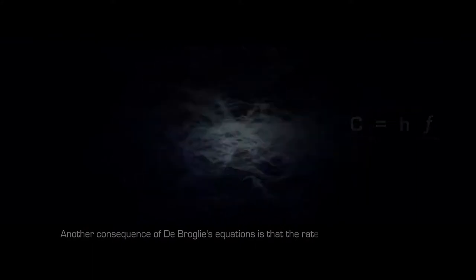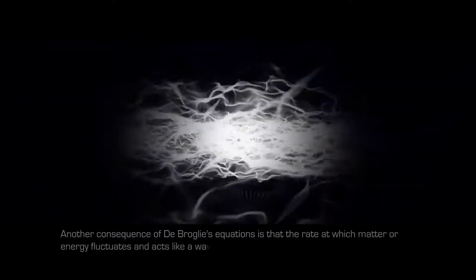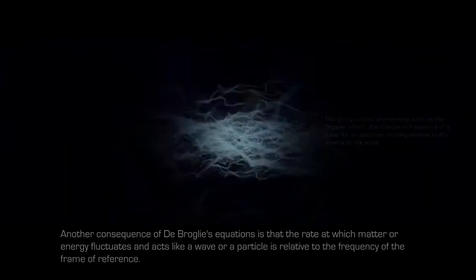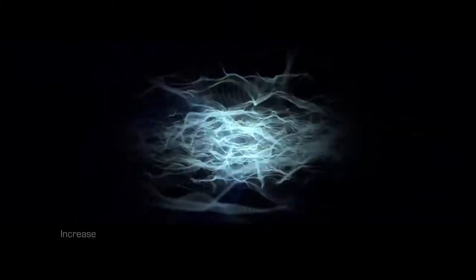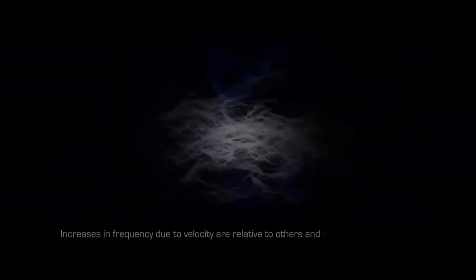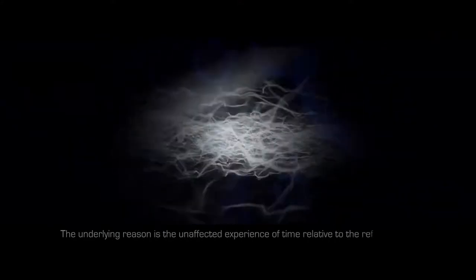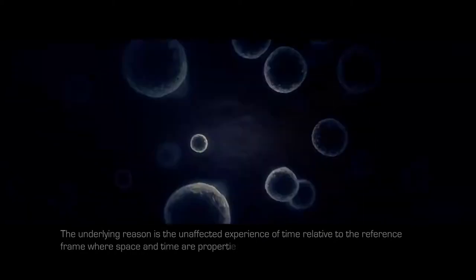Another consequence of de Broglie's equations is that the rate at which matter or energy fluctuates and acts like a wave or a particle is relative to the frequency of the frame of reference. Increases in frequency due to velocity are relative to others and bring about phenomena such as time dilation. The underlying reason is the unaffected experience of time relative to the reference frame, where space and time are properties of quanta and not the other way around.